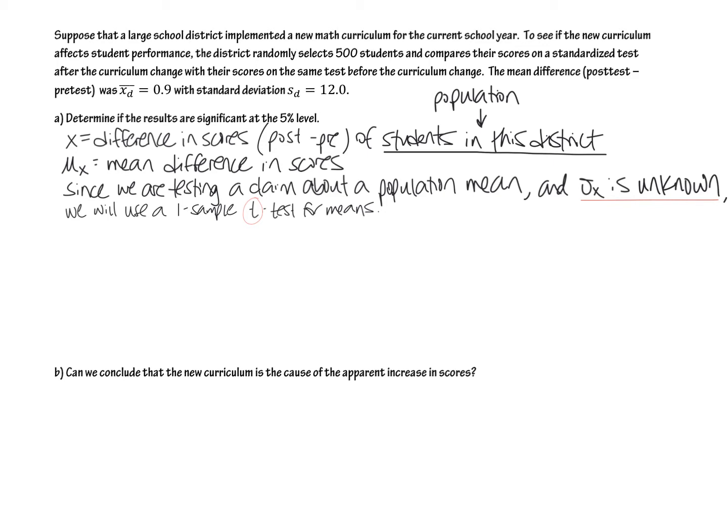And then in the wording of the question up here, it doesn't lead you to think that the district is hoping for improvement or even though that's kind of obvious. It doesn't say the district thinks that the new math curriculum sucks and that scores declined. We're just testing is there a difference. Strictly, we don't know if we are swayed to the right or to the left in order to be greater than or less than. So in this case, our Ha is going to be a two-sided test, the mu of x not equal to zero.